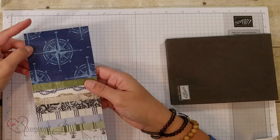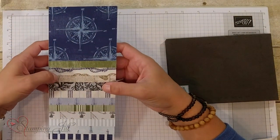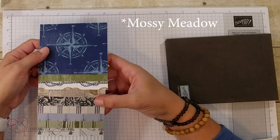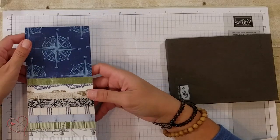This paper is beautiful. The colors in the paper are balmy blue, night of navy, soft suede, mellow moss, crumb cake, and basic black. So they're really a fun bunch of neutral shades that you can use for a lot of different things.